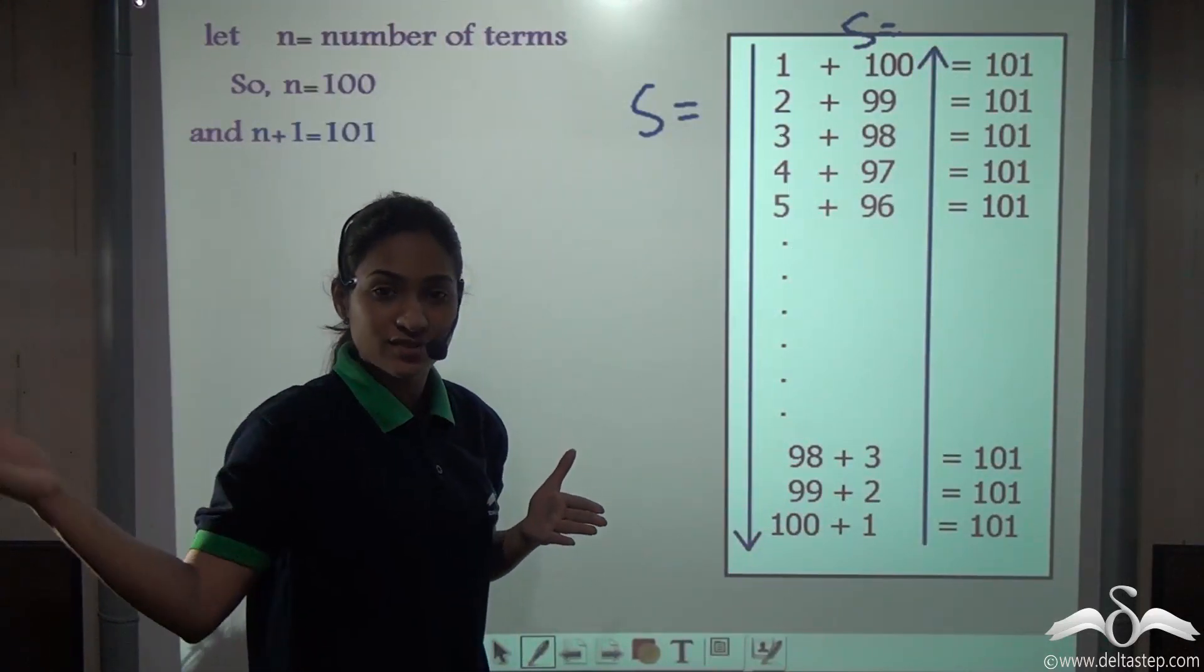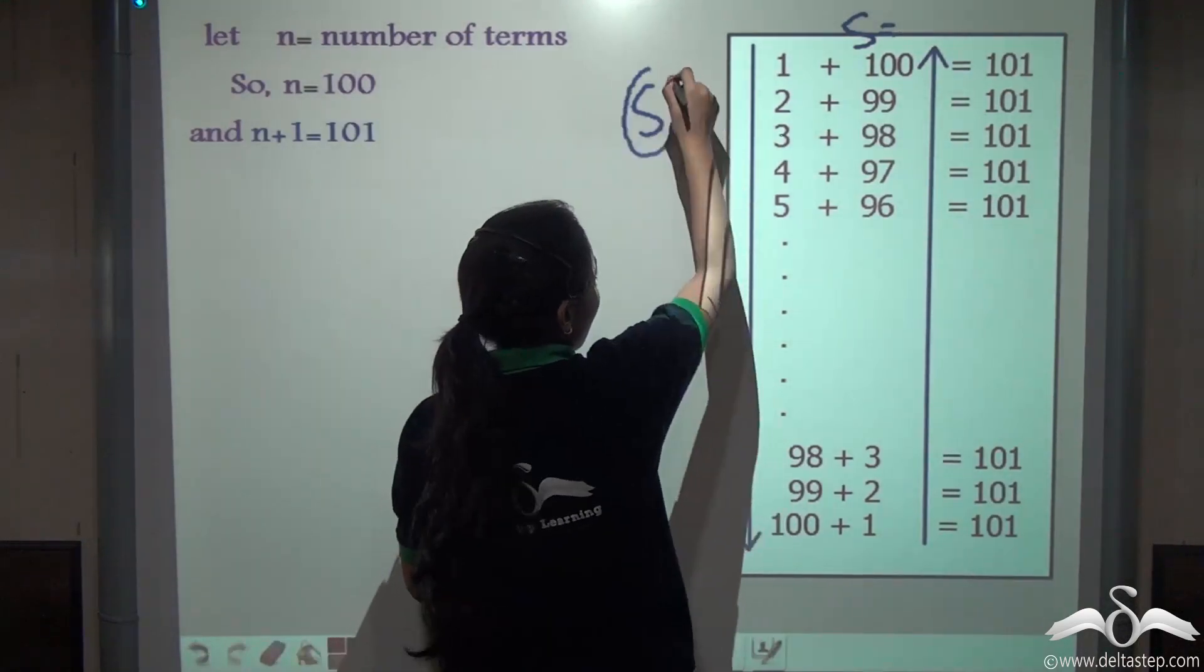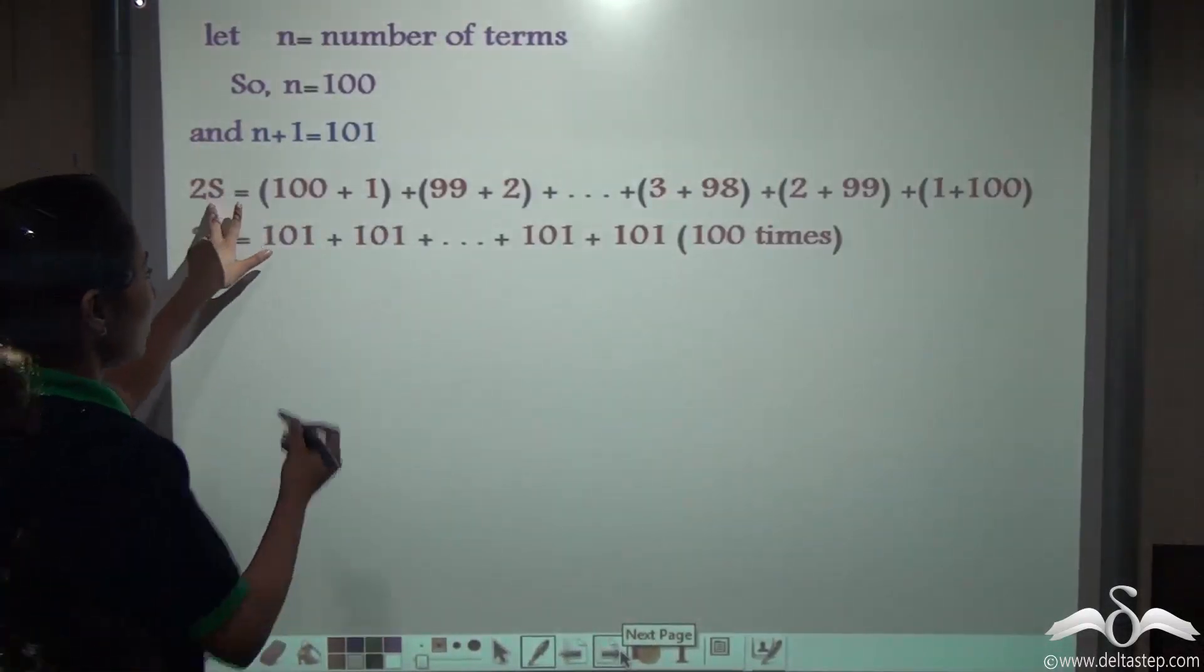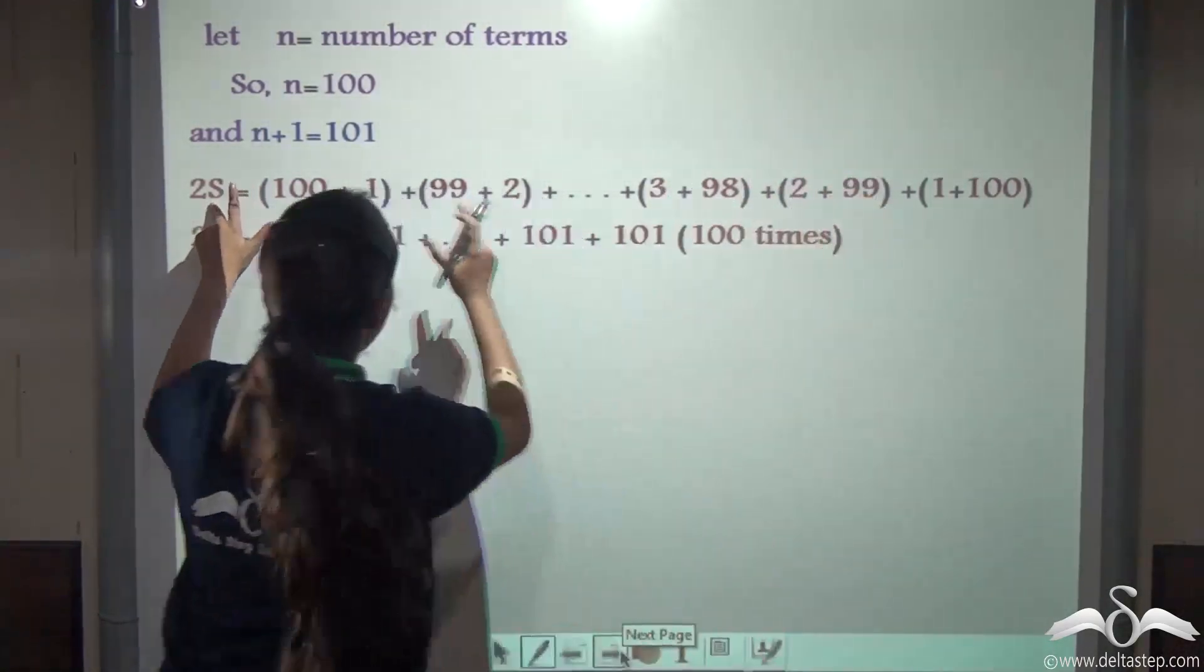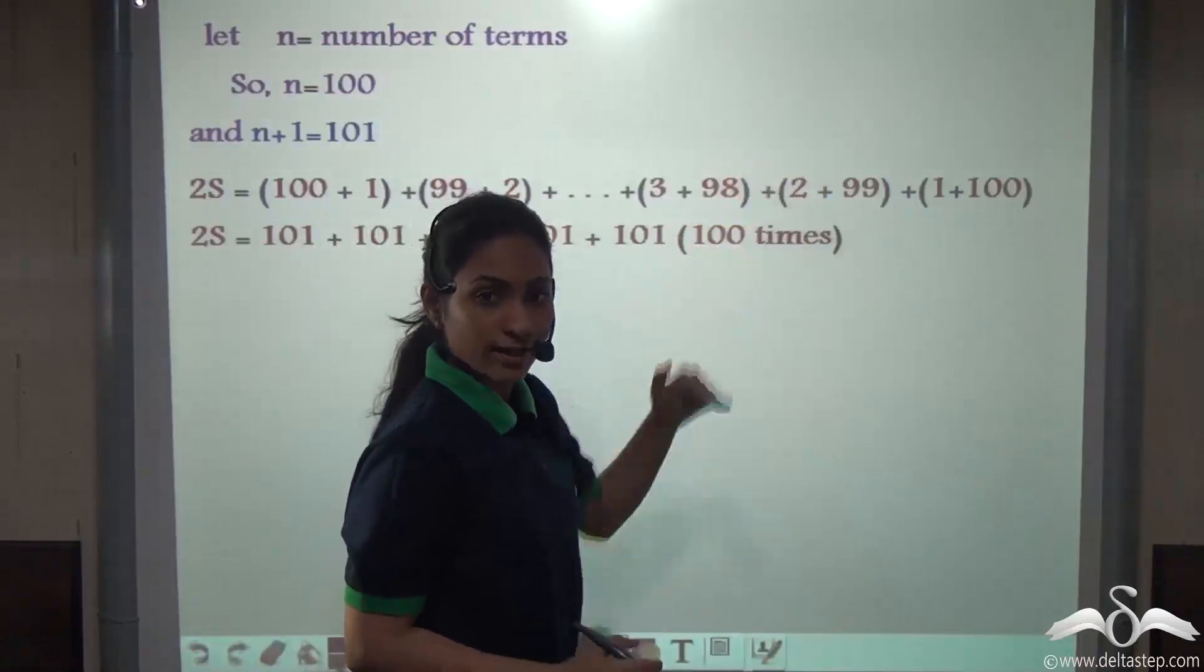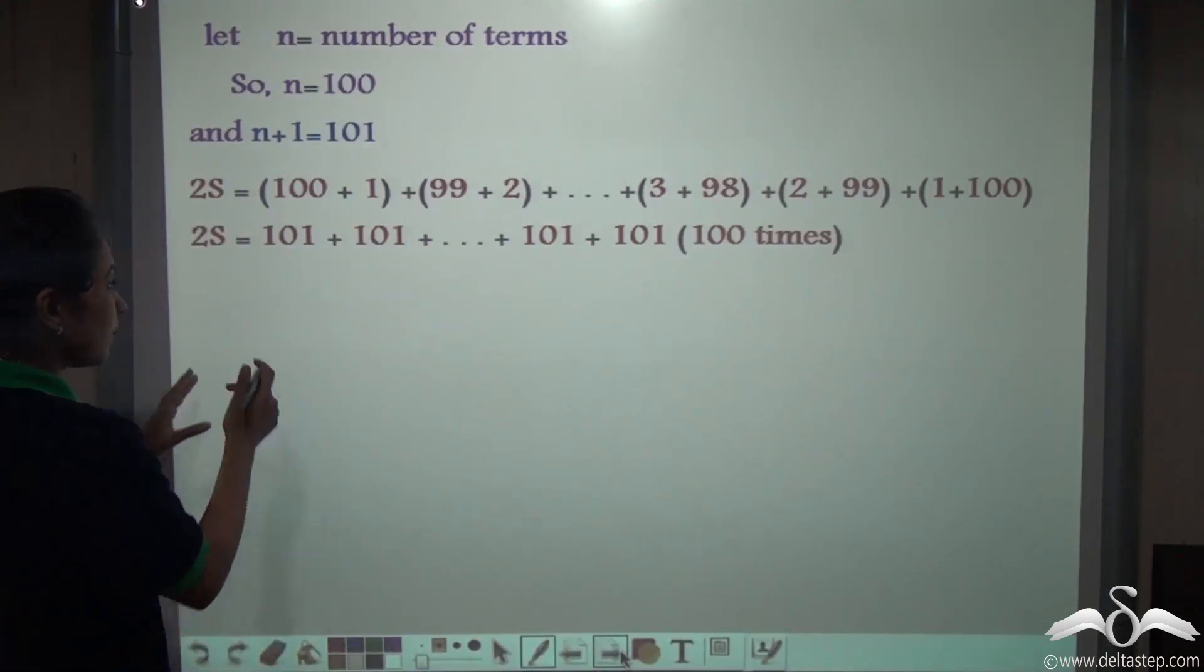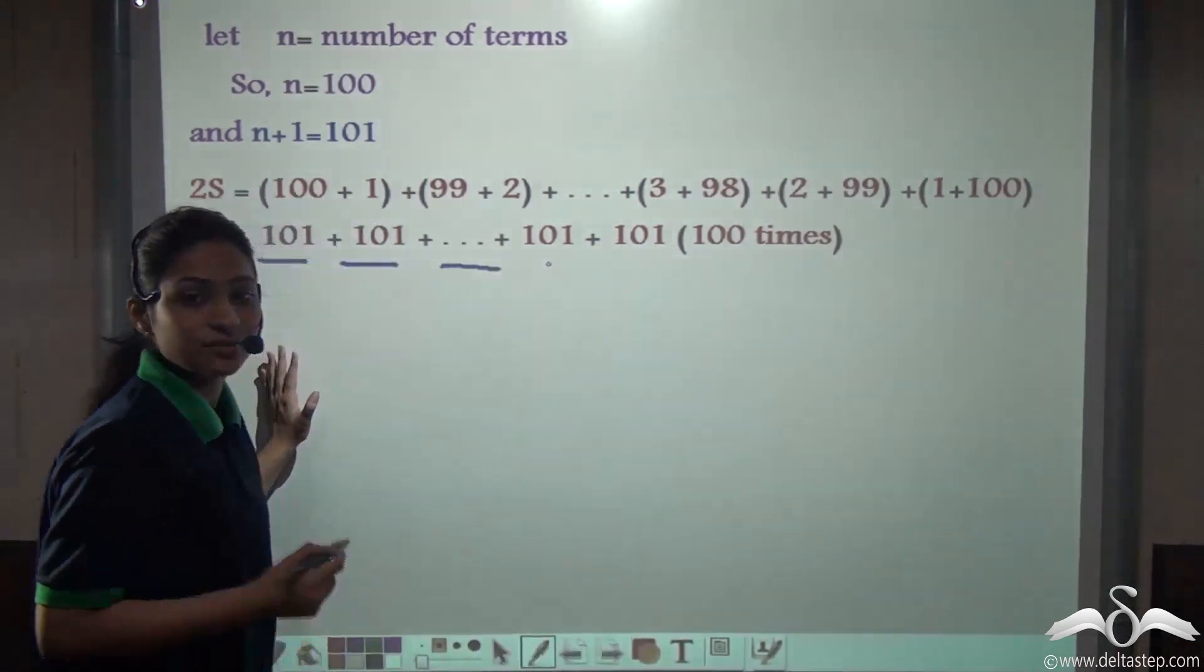Adding 1, 2, 3, 4, 5, 6 or adding 100, 99, 98 till 1 will give you the same answer. So adding S plus S gives you 2S. So 2S is 100 plus 1 equals 101, 99 plus 2 equals 101, and so on. So 2S is 101, 101, 101 added with itself. How many times? 100 times.